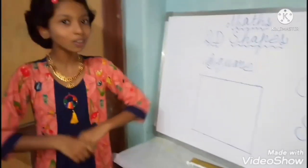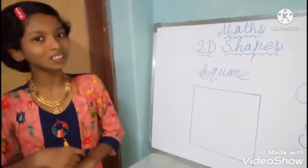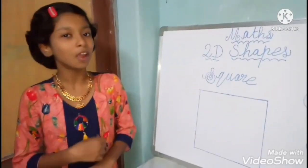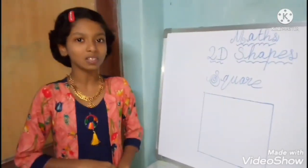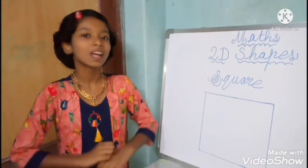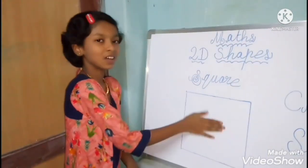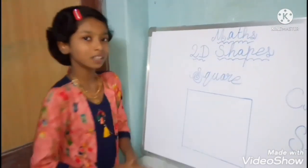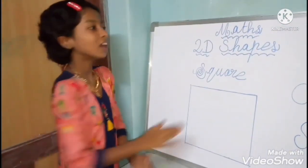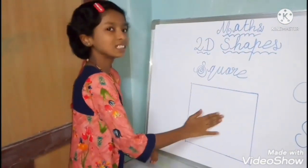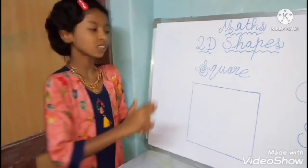First, we want to know what is a 2D shape. Do you know what is a 2D shape? Nothing but a flat surface. What is a 2D shape? The flat surface.